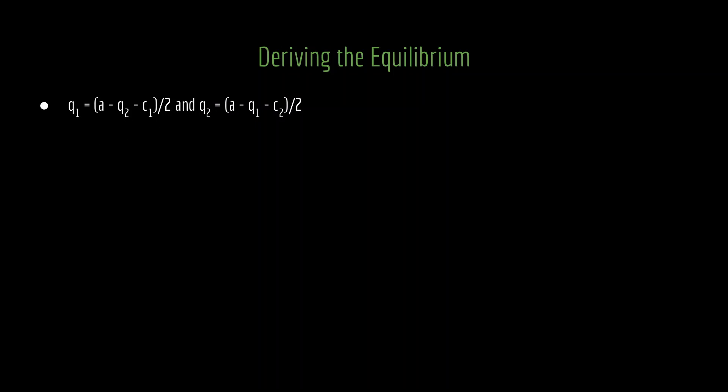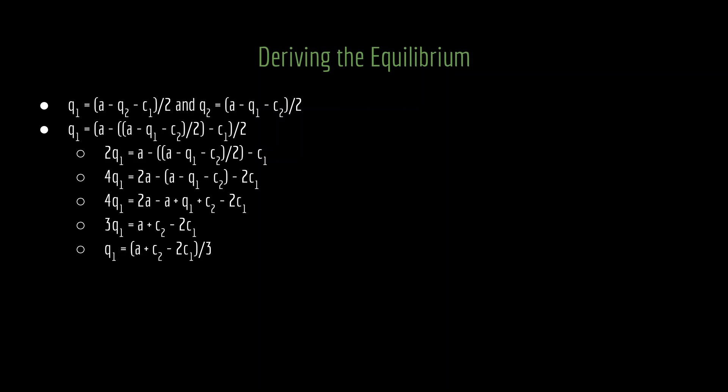Let's do that. This involves a lot of algebra, but it's not actually that difficult. We have these as our best response functions. Let's take Q2 from the right and put that as Q2 in the left - a simple substitution procedure. Through these consecutive steps, I'm simplifying first by multiplying out denominators so we don't have to worry about fractions. Then I'm collecting all Q1 terms on one side. We want to solve for Q1 because now that we've eliminated Q2, it's the only thing we can solve for. Once we do that, we have q1 equals (a + c2 - 2c1) divided by 3. That is what firm one is going to produce in equilibrium.